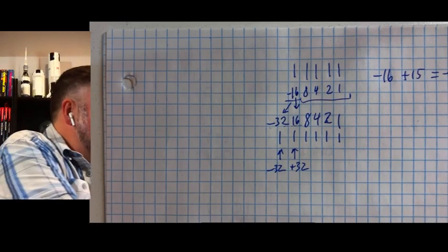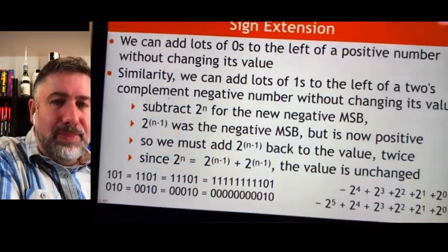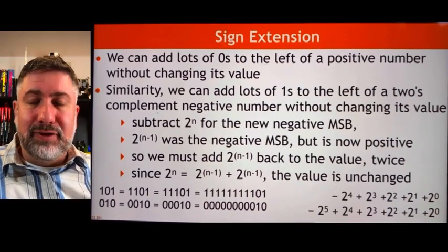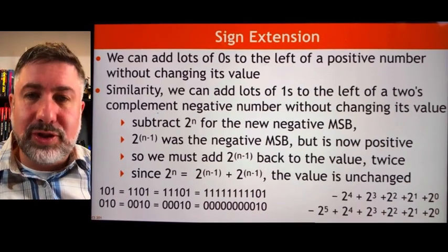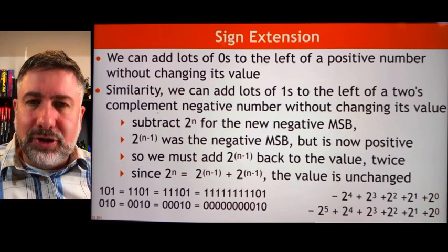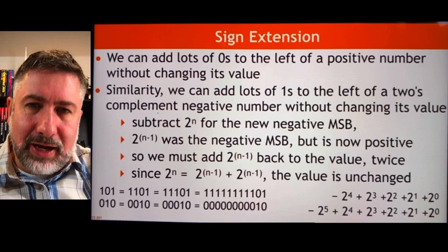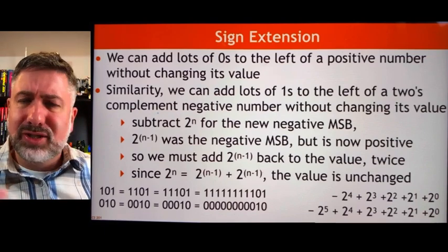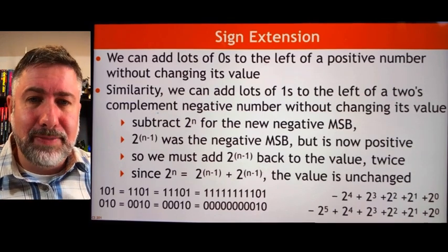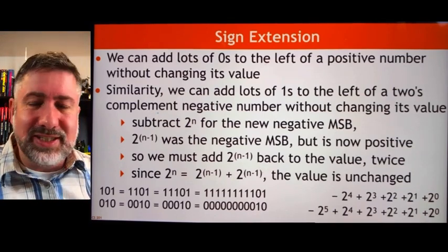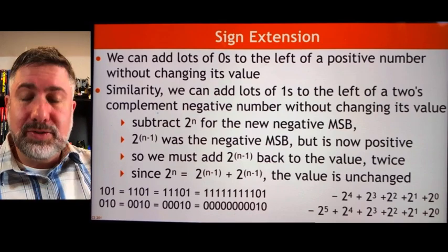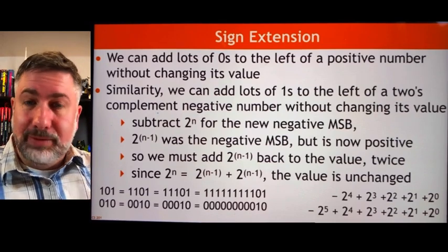This gives us sign extension, which will be very useful. Keep in mind it only works if you have a physical location to store the new information — you can't just invent bigger registers. When we build our computer, we need to account for converting numbers from 8 bits to 16 bits to 32 bits using sign extension. As a useful takeaway: all zeros means zero, and all ones means negative one — good numbers to remember.